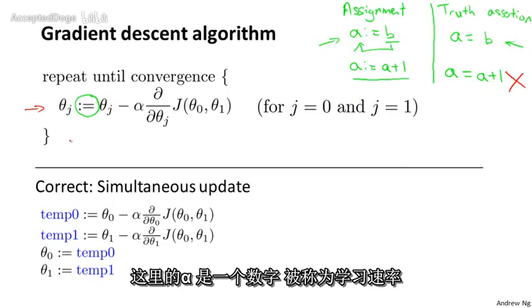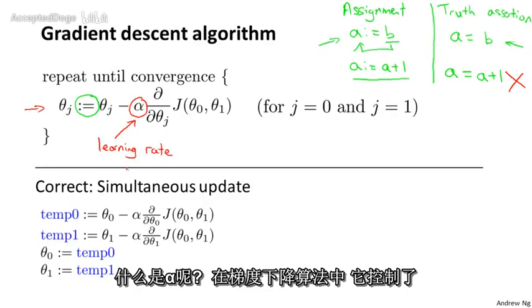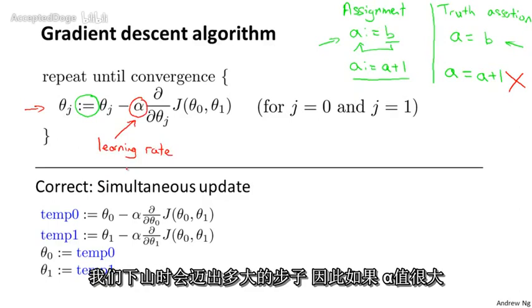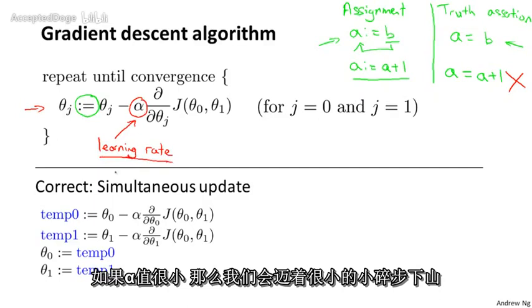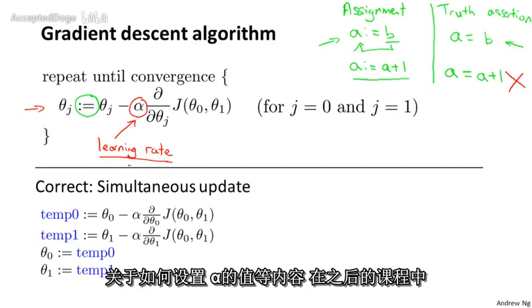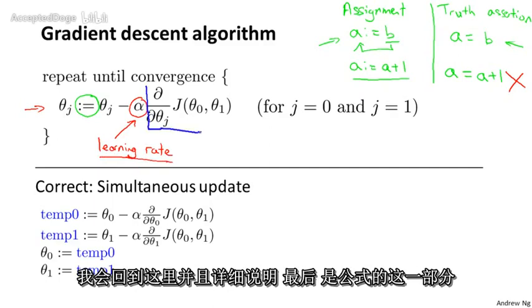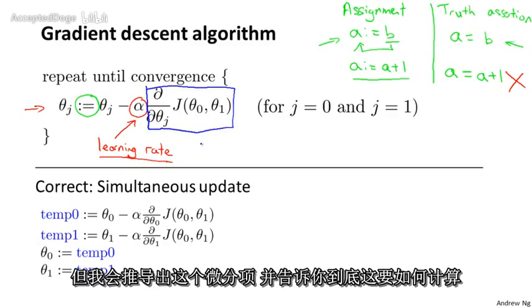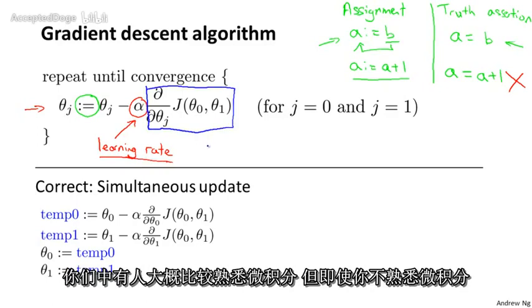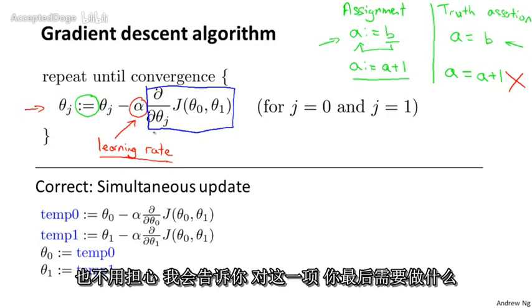Alpha here is a number called the learning rate. What alpha does is control how big a step we take downhill with gradient descent. If alpha is very large, that corresponds to a very aggressive gradient descent procedure where we take huge steps downhill. If alpha is very small, we take little baby steps downhill. I'll come back and say more about how to set alpha later. Finally, this term here is a derivative term. I'll derive it and tell you exactly what it is shortly. Even if you aren't familiar with calculus, don't worry — I'll tell you everything you need to know about this term.